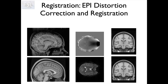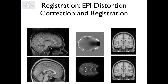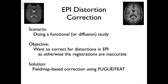Welcome to this video on registration. My name is Mark Jenkinson and I'm going to be talking about EPI distortion correction and how that interacts with registration. EPI is the pulse sequence that we use to acquire functional and diffusion images. So this is equally relevant for functional and diffusion imaging, though most of the examples I'll be giving will be related to functional imaging.